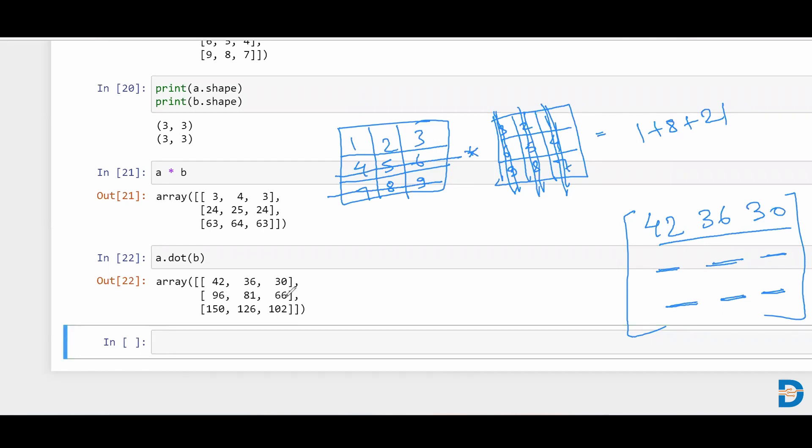And then 96, 81, 66. Similarly, this space will be filled with 96, 81, and 66, and 150, 126, 102. So 150, 126, and 102.